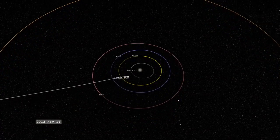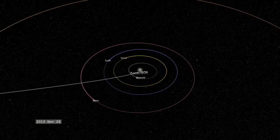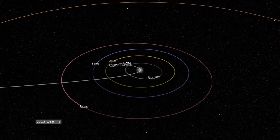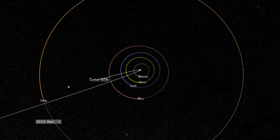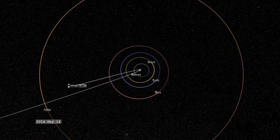Comet ISON, an upcoming sungrazer with perihelion on November 28, 2013, is not on the Kreutz path. In fact, ISON's orbit suggests that it may gain enough momentum to escape the solar system entirely and never return.